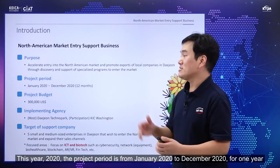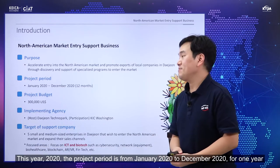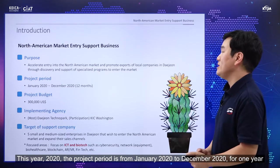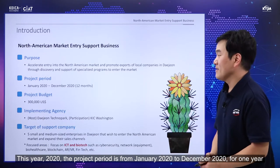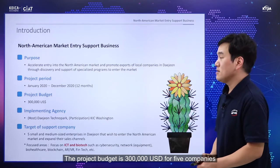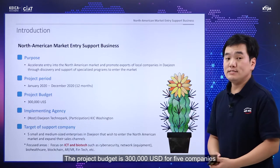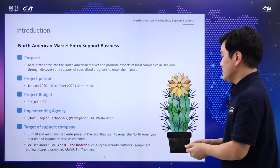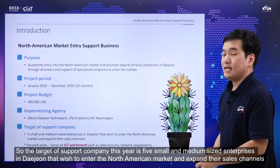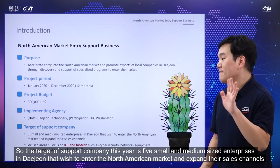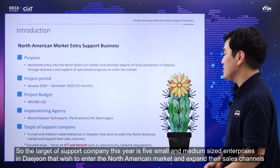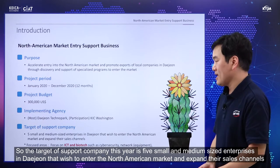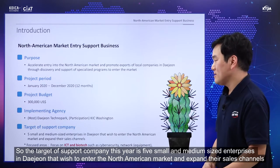This year 2020, the project period is January 2020 to December 2022 — one year. The project budget is 300,000 US dollars for five companies. The target support companies this year are five small and mid-sized enterprises in Daejeon that wish to enter the North American market and want to expand their sales channel.